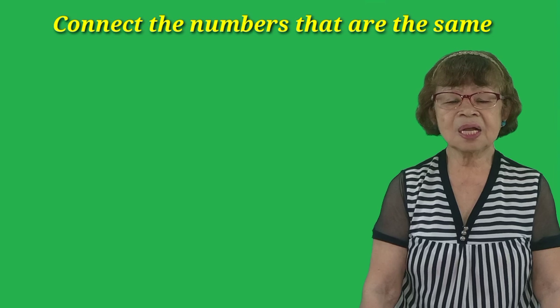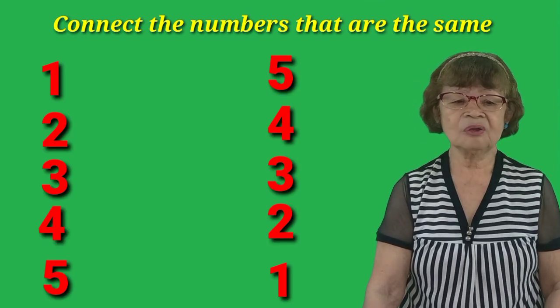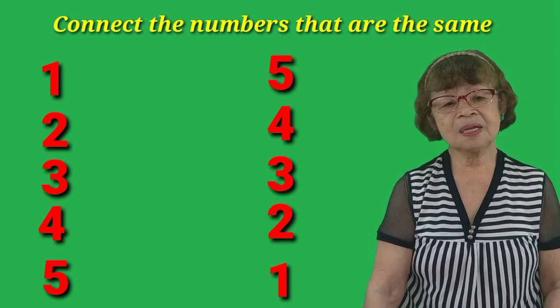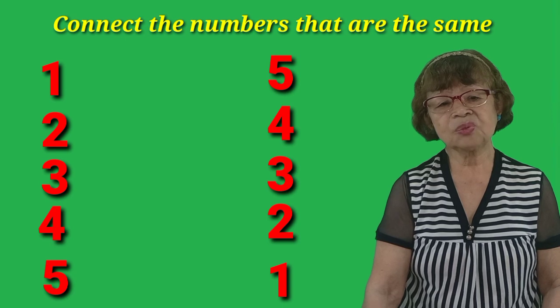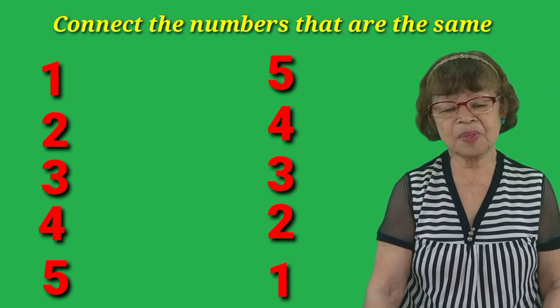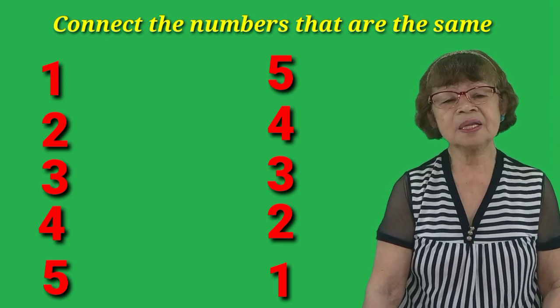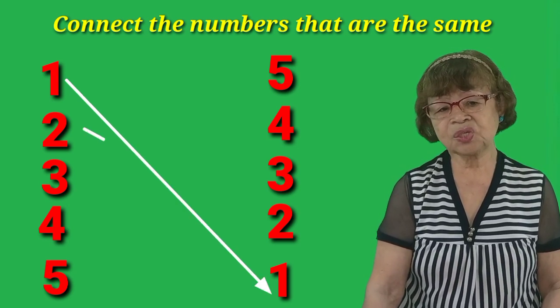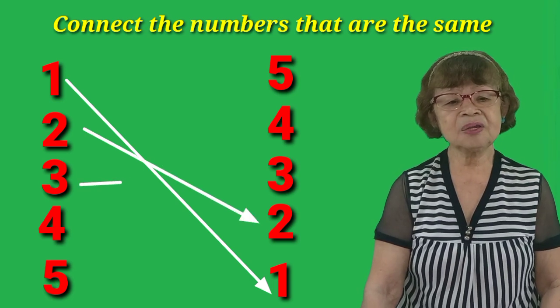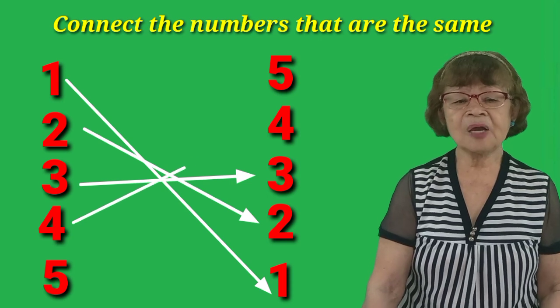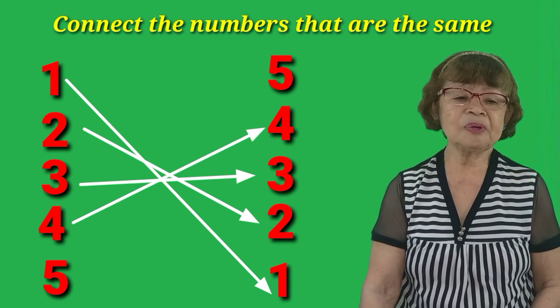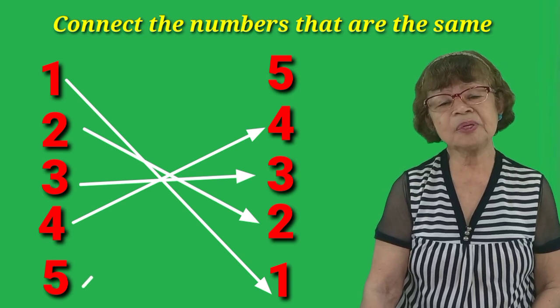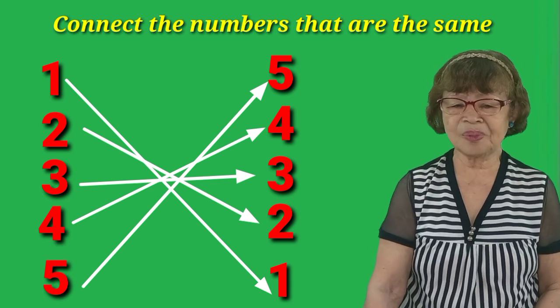Hi Ken Kids! Today we're going to have our activity. It is about connecting numbers to the same numbers. The first column is 1, 2, 3, 4, 5 and the second column is 5, 4, 3, 2, 1. We connect number 1 to number 1, number 2 to number 2, number 3 to number 3, number 4 to number 4, and number 5 to number 5 — which is at the top. We finished connecting our numbers! Yay!